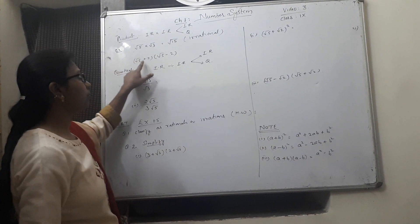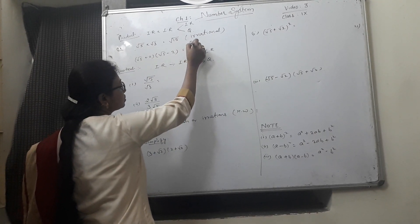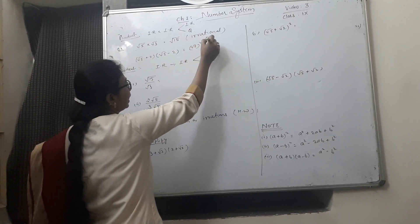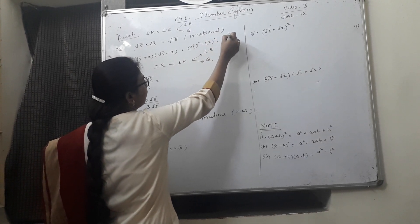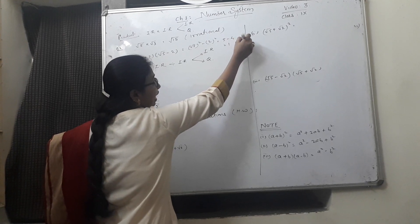So this is in the same form a plus b, a minus b. We can use the identity as root 5 square minus 2 square gives you 5 minus 4. The result is 1 which is clearly a rational number.